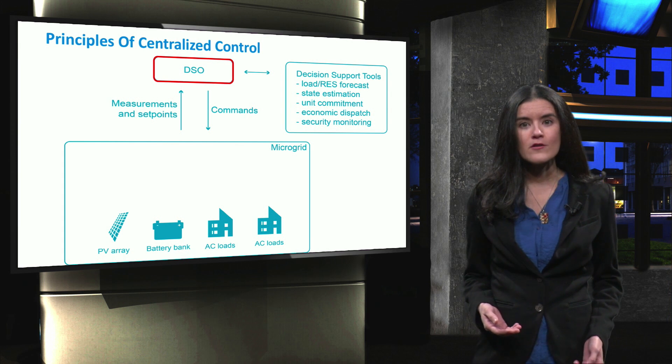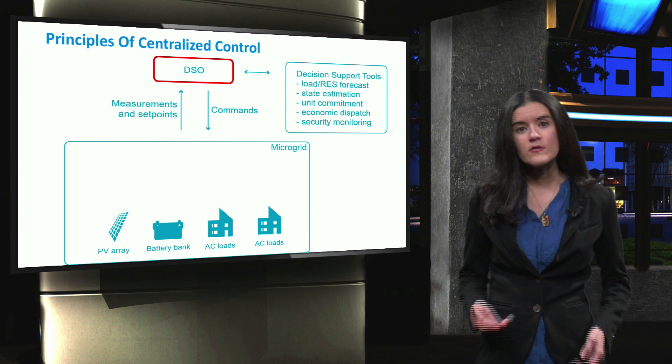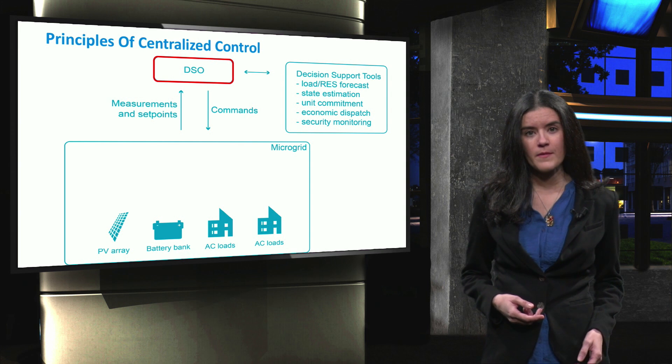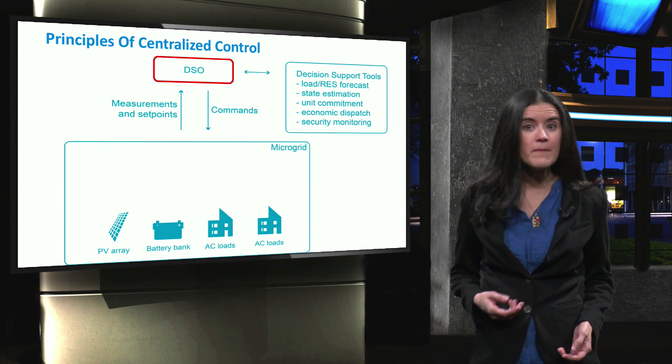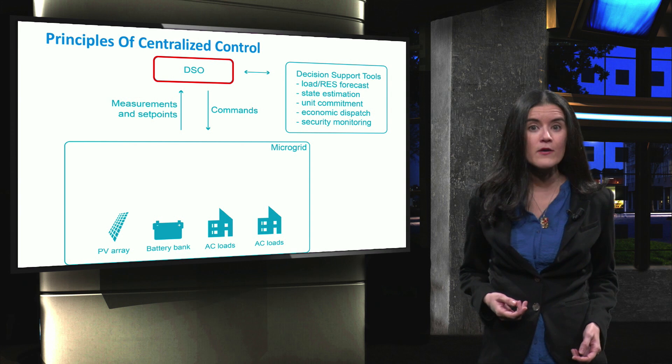A microgrid central controller can be described as the controller that determines the set points of the loads, distributed generation and storage units. A microgrid central controller can be managed by the distribution system operator itself, or by a dedicated microgrid operator.